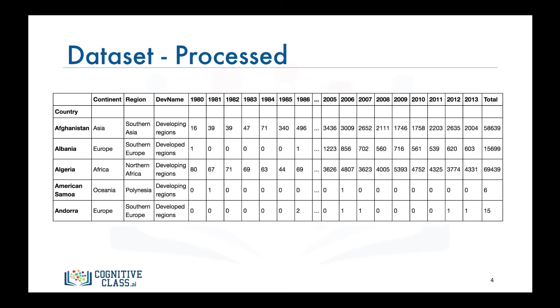Each row also contains numerical figures of annual immigration from that country to Canada from 1980 to 2013. Now let's process the data frame so that the country name becomes the index of each row. This should make retrieving rows pertaining to specific countries a lot easier.